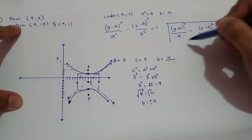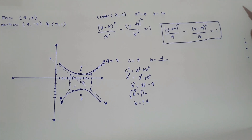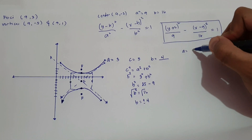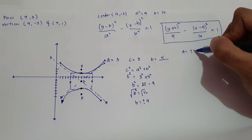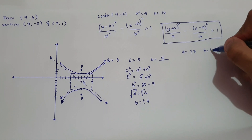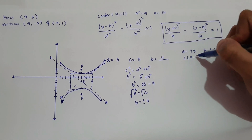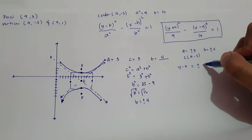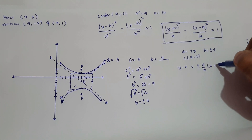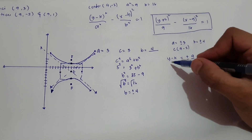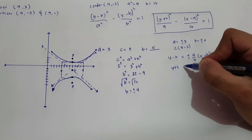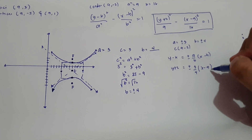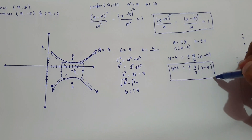So this will be our standard form. Now let us determine the equation of our asymptote. Our a is ±3, b is ±4, and our center is (9, −2). Since our hyperbola opens upward and downward, we use: y − k = ±(a/b)(x − h). Therefore: y + 2 = ±(3/4)(x − 9). So this will be the equation of our asymptote.